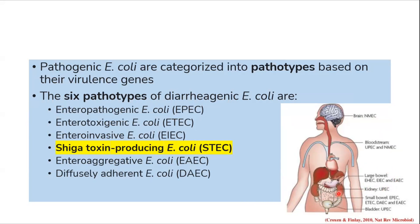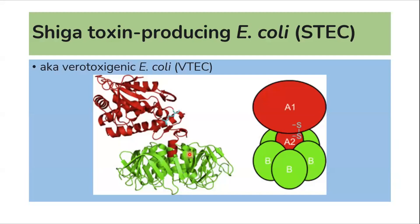E. coli that cause diarrhea are classified into six pathotypes: enteropathogenic, enterotoxigenic, enteroinvasive, Shiga toxin-producing, enteroaggregative, and diffusely adherent E. coli. We will focus on Shiga toxin-producing E. coli, which is capable of causing multiple outbreaks and hemolytic uremic syndrome.